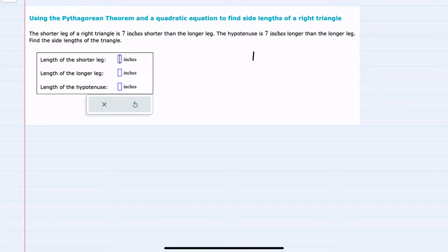So I'll start by just drawing a right triangle that clearly has a long leg, a short leg, and a hypotenuse.